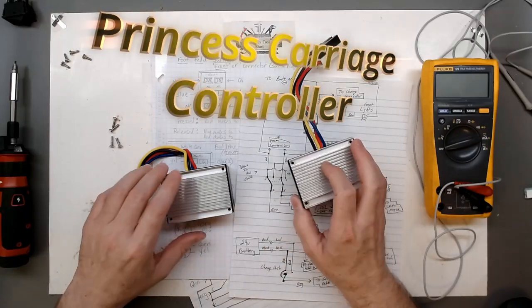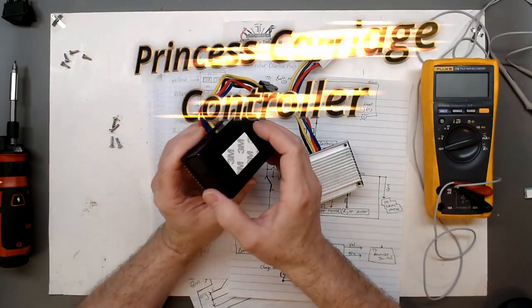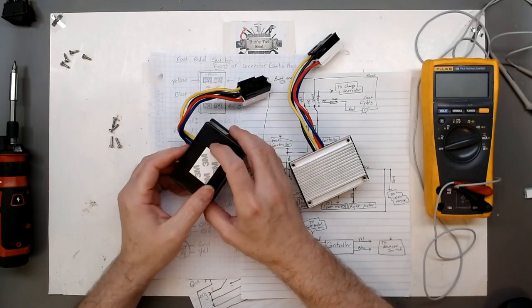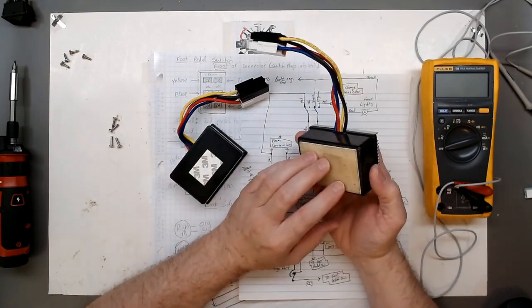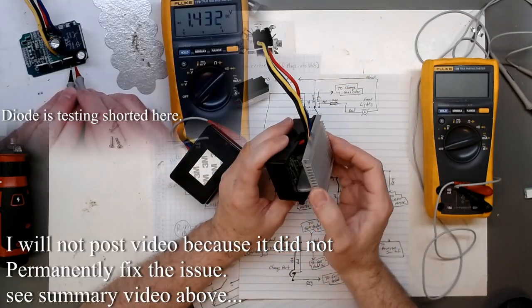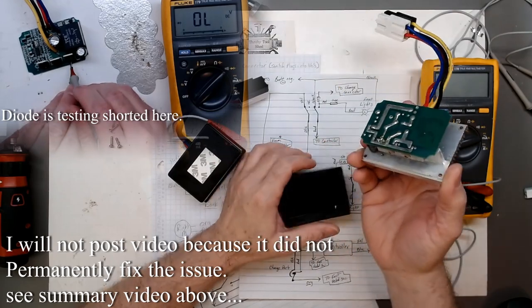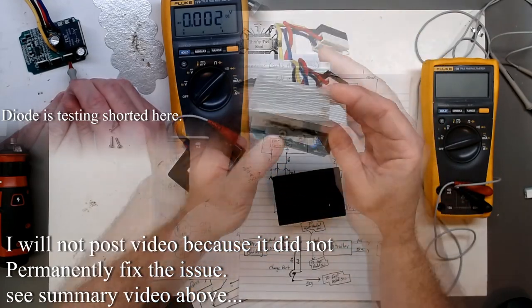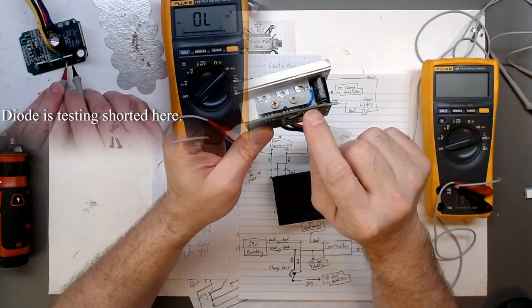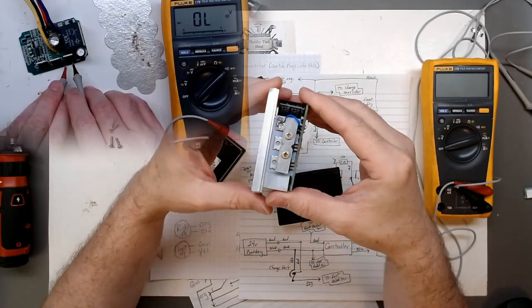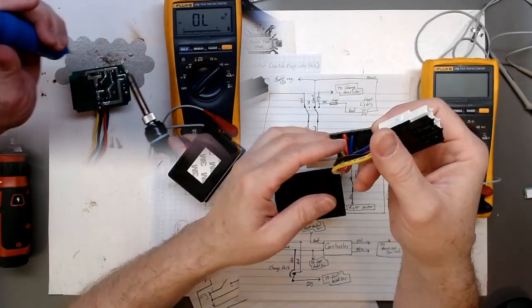Today I thought we'd take a look at this controller for the princess carriage. I did a video about trying to repair the original controller from the carriage. It had a lot of corrosion, we cleaned up the corrosion, we had a bad dual diode assembly here, and we put it back together. I actually tested it on the bench.